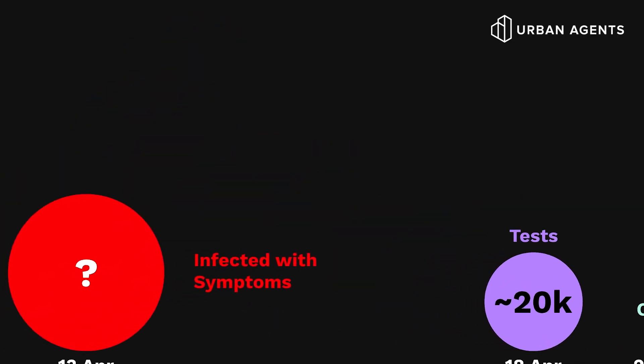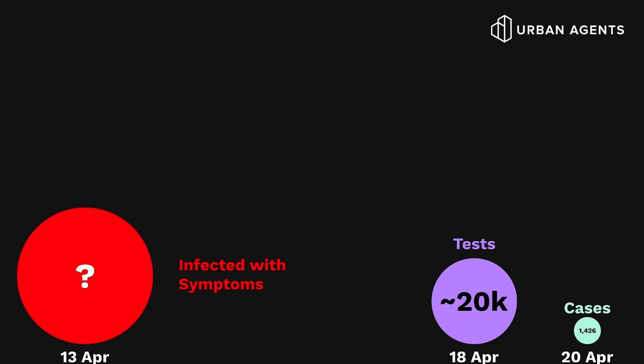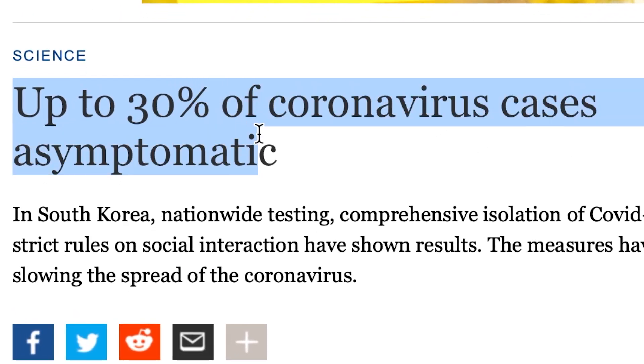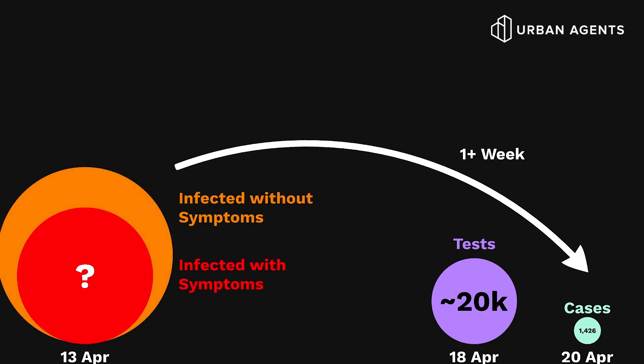The really scary part is literally how many people are actually infected out there — and that is the big question mark. We all know this virus has an incubation period of around five days from infection to when symptoms start showing. So for cases reported on 20th April, chances are they got infected on 13th April or even earlier. Now, I've drawn a circle representing those infected with symptoms. But we also know there are people infected who don't show any symptoms — reports suggest as much as 30% of those infected are asymptomatic. So the actual circle of infected people, with or without symptoms, should be bigger.